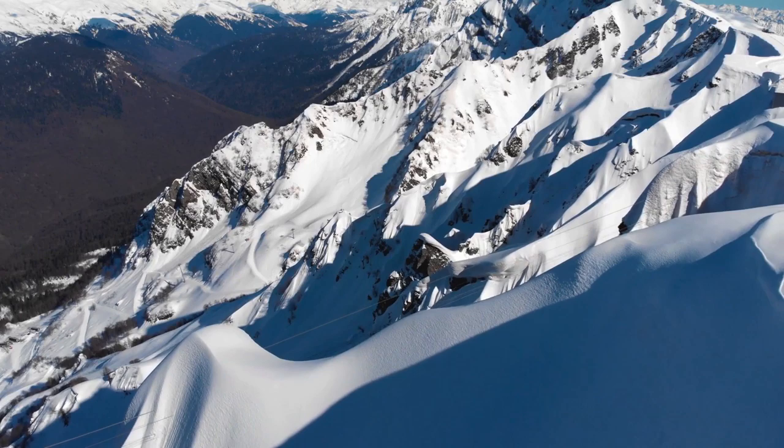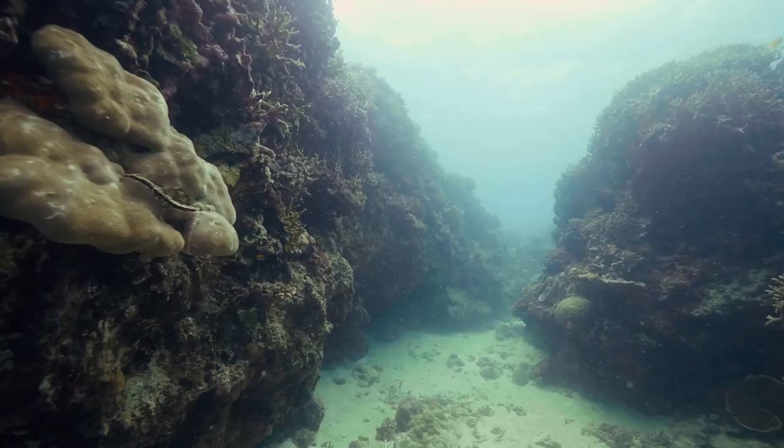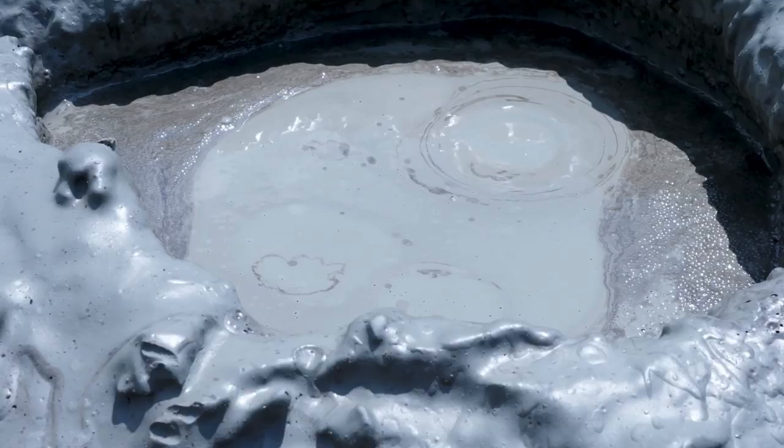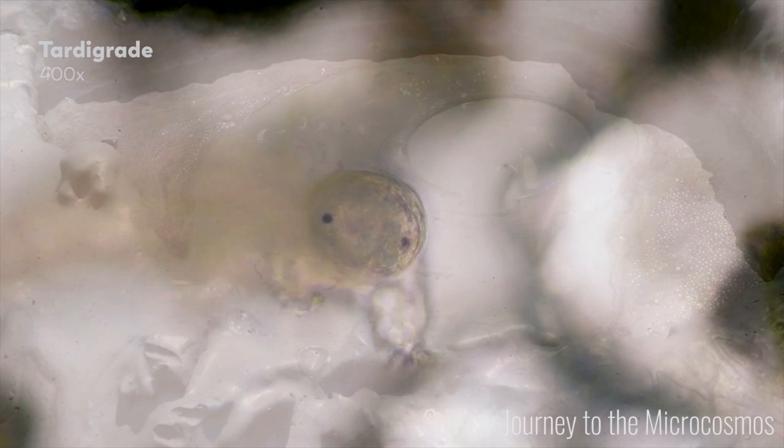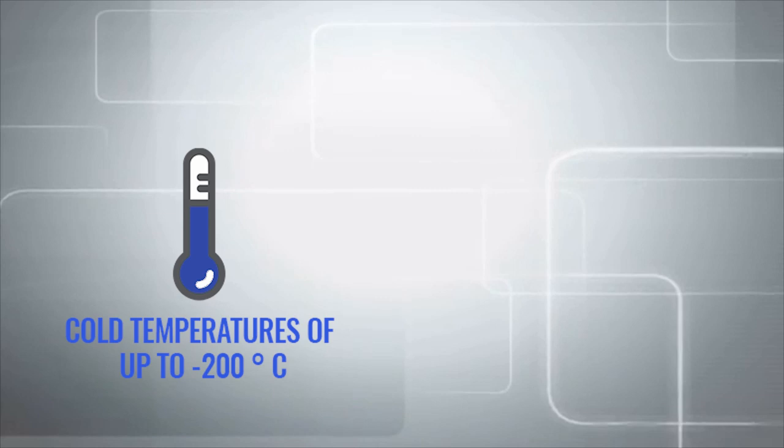Tardigrades have been found on the top of the Himalayas, in the depths of the ocean, and even in mud volcanoes. A tardigrade can withstand such cold temperatures of up to negative 200 degrees Celsius, that is, almost absolute zero, and so hot, up to more than 100 degrees Celsius.